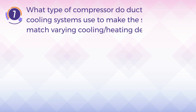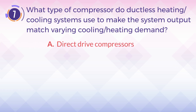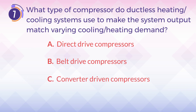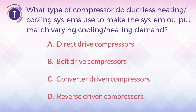Number 7. What type of compressor do ductless heating or cooling systems use to make the system output match varying cooling or heating demand? A. Direct-drive compressors. B. Belt-drive compressors. C. Converter-driven compressors. D. Reverse-driven compressors.